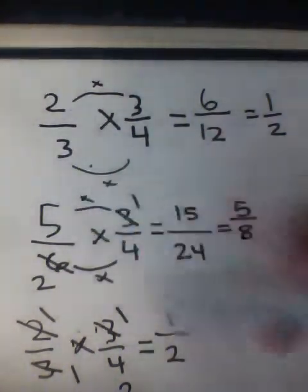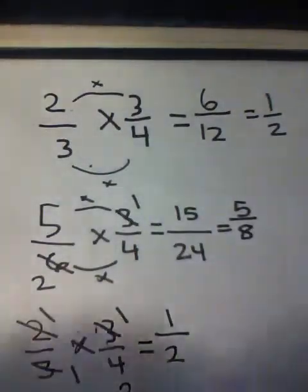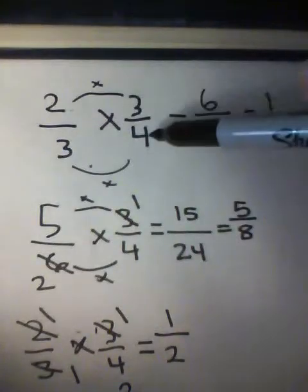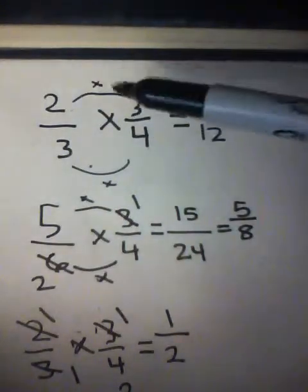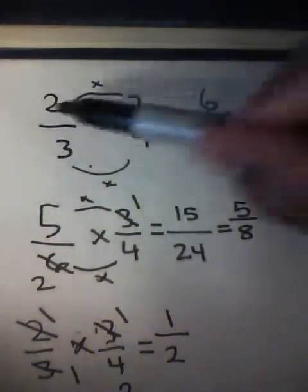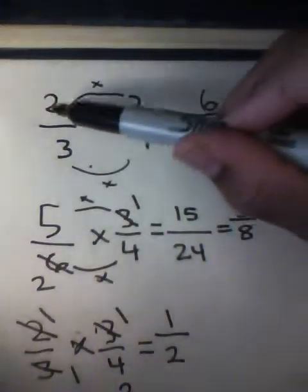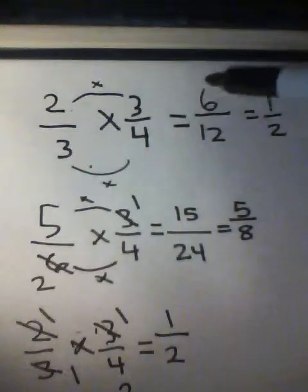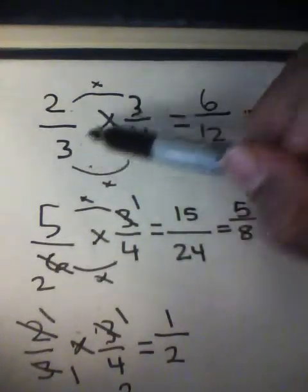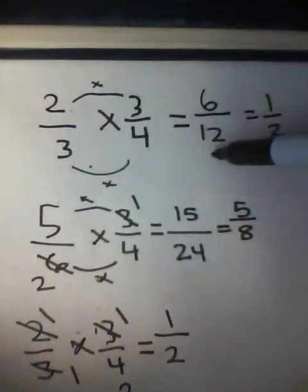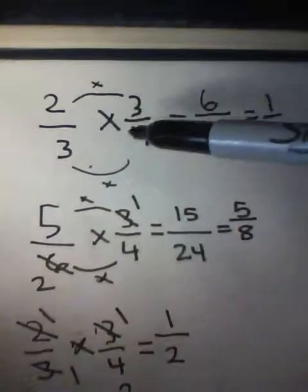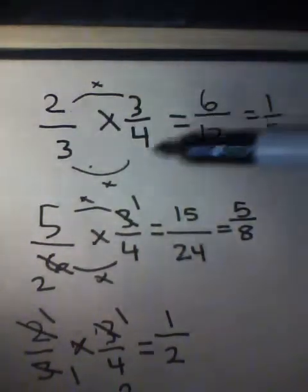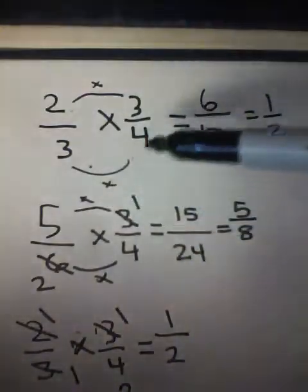So basically right here we have 2 over 3 times 3 over 4. When you're multiplying fractions you always start with the numerators — multiply the numerators: 2 times 3 equals 6. Then multiply the denominators: 3 times 4 equals 12. That's all you do — it's just like multiplying. So you get 6 over 12, and you reduce it, which equals 1 over 2.